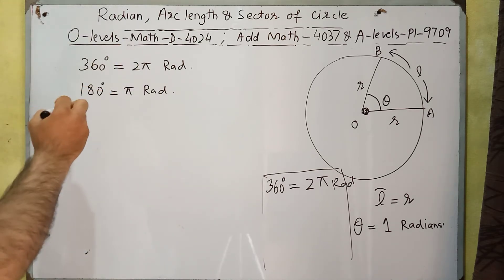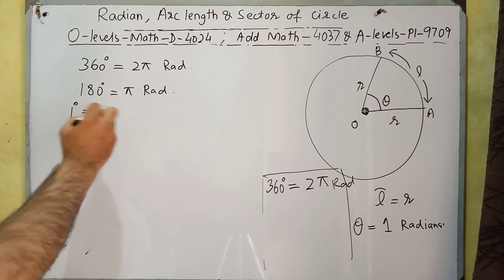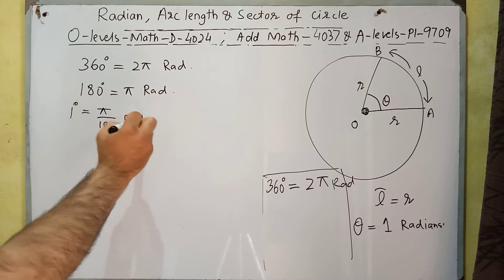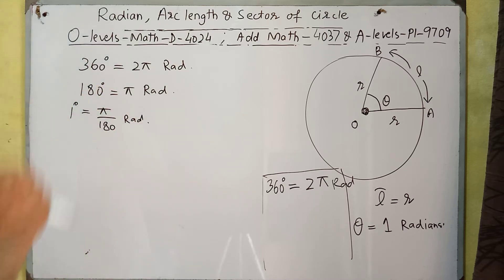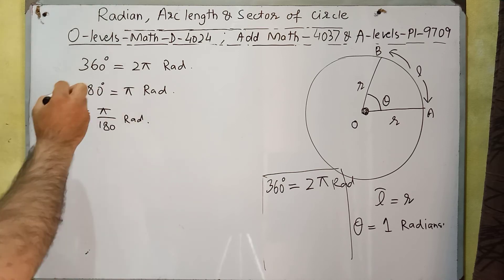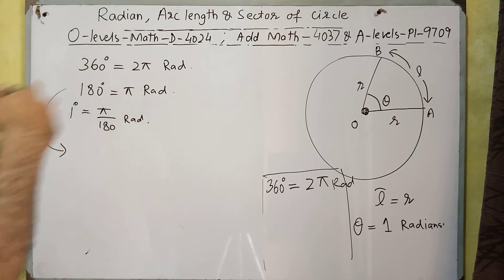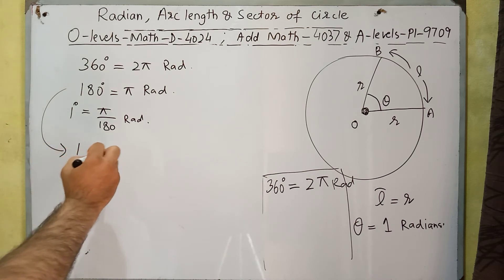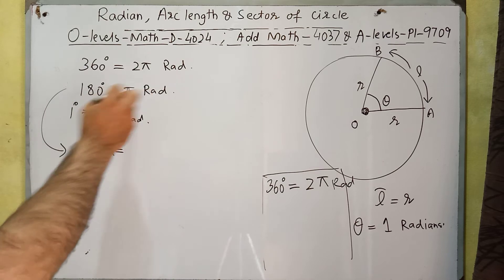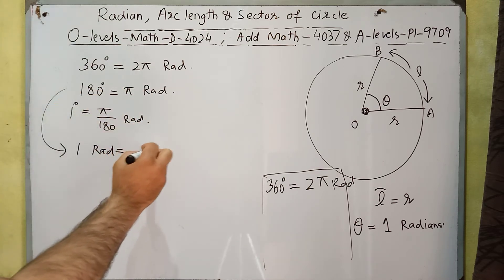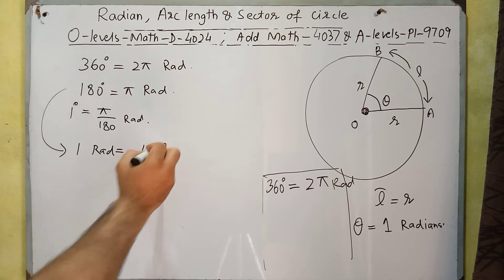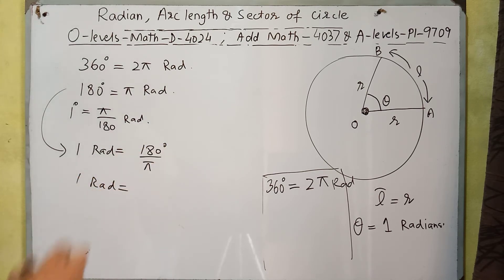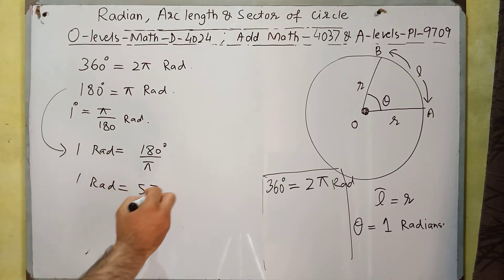Similarly, 1 degree is equal to π over 180 radians, because 180 comes into the denominator. And 1 radian is equal to 180 over π degrees, because π comes into the denominator. This is approximately equal to 57 degrees, since 180 divided by π gives approximately 57 degrees.